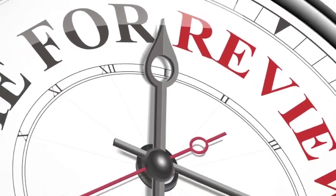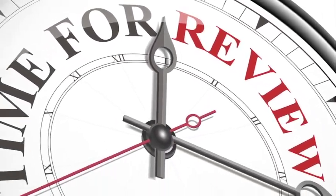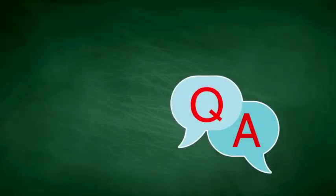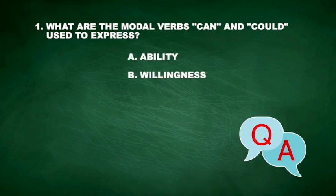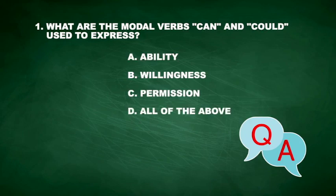Let's review what we have learned about the modal verbs can and could. Question 1: What are the modal verbs can and could used to express? A. Ability. B. Willingness. C. Permission. D. All of the above. The correct answer is D. Can and could are used to express ability, willingness, and permission.